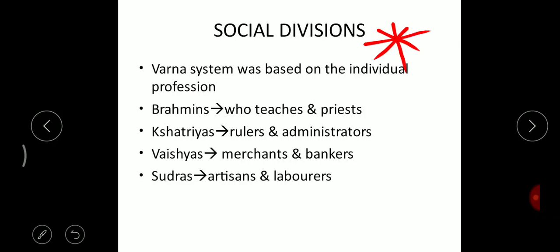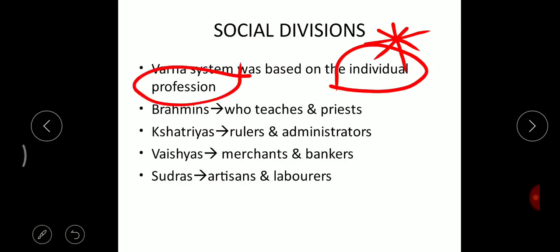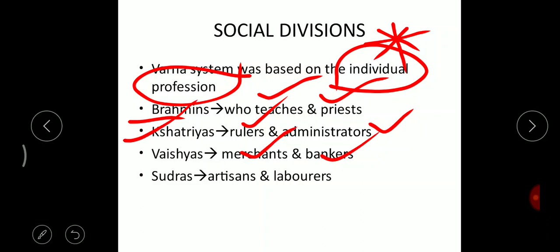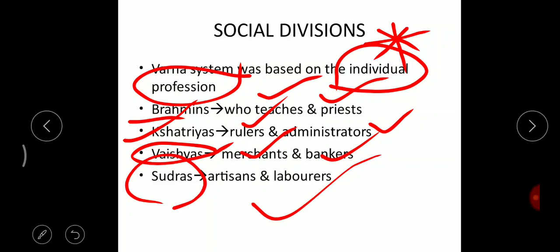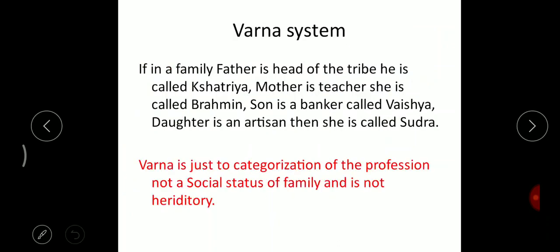Social division is a very interesting topic in the Vedic period. In the early Vedic period, the Varna system started, which was solely based on profession. If an individual took up teaching and priesthood, he was called Brahmin. If a person took up being a warrior, ruler, or administrator, he was called a Kshatriya. If a man or woman took up banking, merchant, or money-lending business, they were called Vaishya. If a person took up arts, crafts, or labor work, they were called a Sudra.